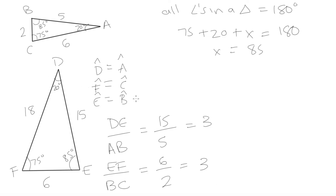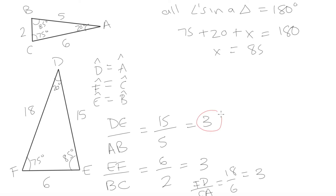Now let's look at side FD and its corresponding side CA. FD over CA equals 18 over 6, which is again equal to 3. So the ratios of all corresponding sides are equal. If we multiply each side of triangle ABC by 3, we get the sides of triangle DEF — it is simply a scaled-up version. Both criteria have been satisfied, so we can conclude these are two similar triangles.